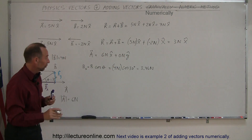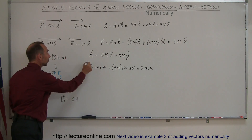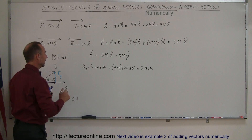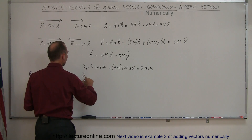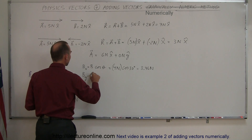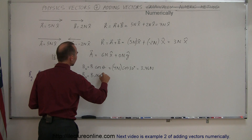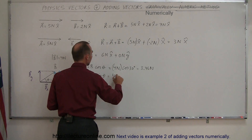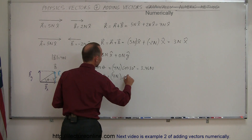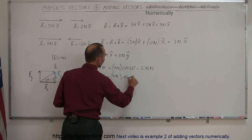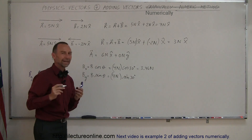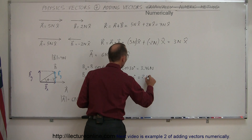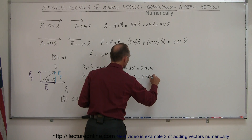And B sub y equals B times the sine of theta, which is 4 Newtons times the sine of 30 degrees. The sine of 30 degrees equals one half, so B sub y equals 2.00 Newtons.